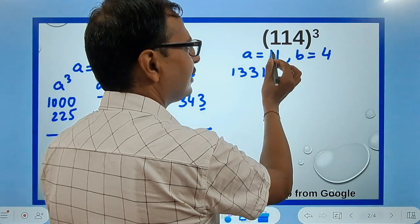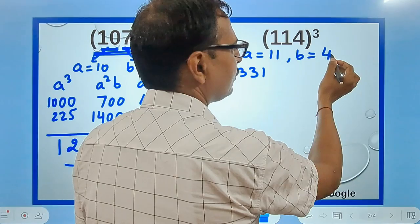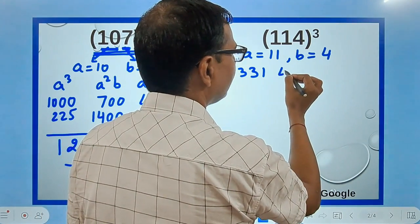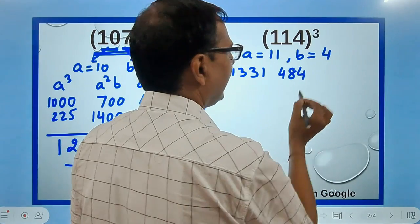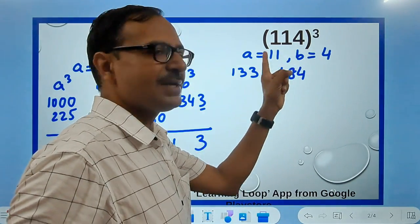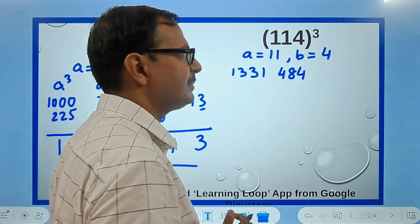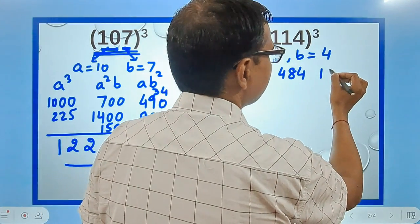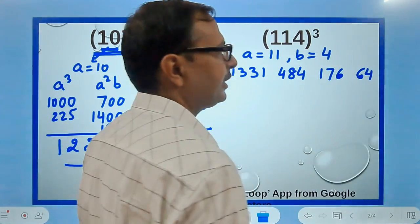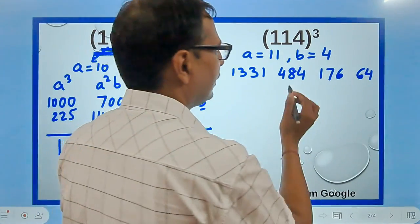a², 121 times 4, so 121 times 4 is 484. And now a times b², so 16 times 11 is 176. And finally, 4³ is 64 to be written here. Now double this up.